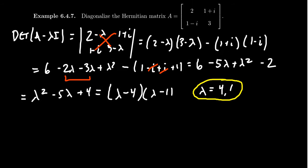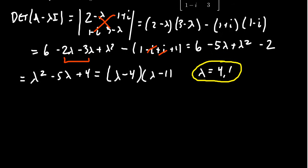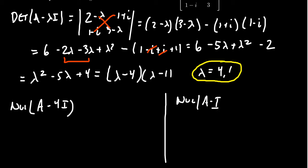Now we proceed to compute the eigenspaces and find a basis for each. We'll consider the null space of A − 4I on one side and the null space of A − I on the other. For A − 4I, the matrix looks like: 2−4 = −2, (1+i), (1−i), and 3−4 = −1.